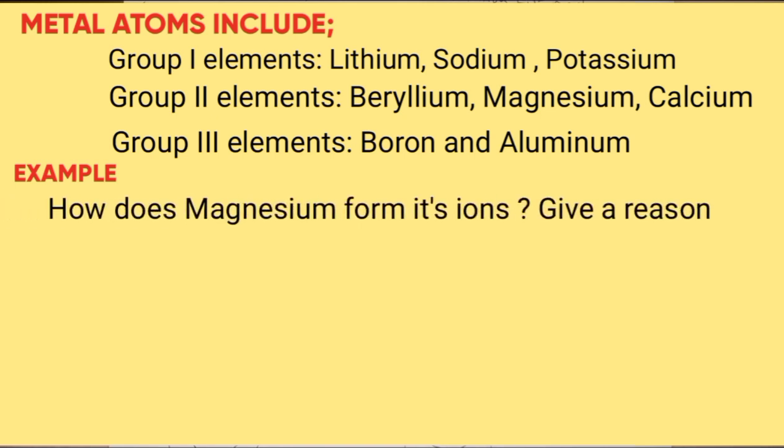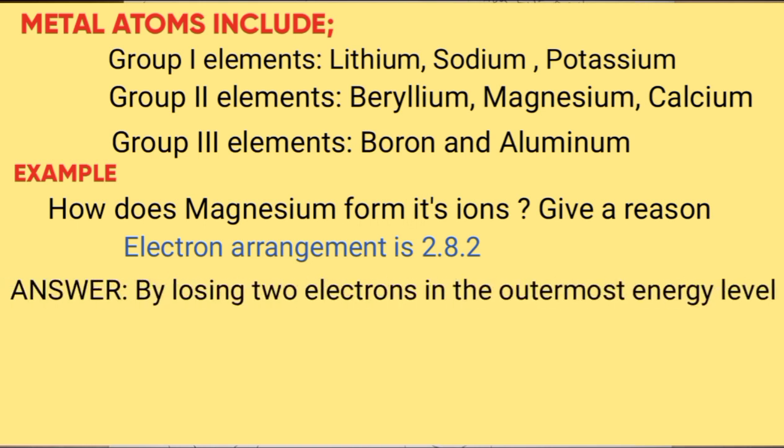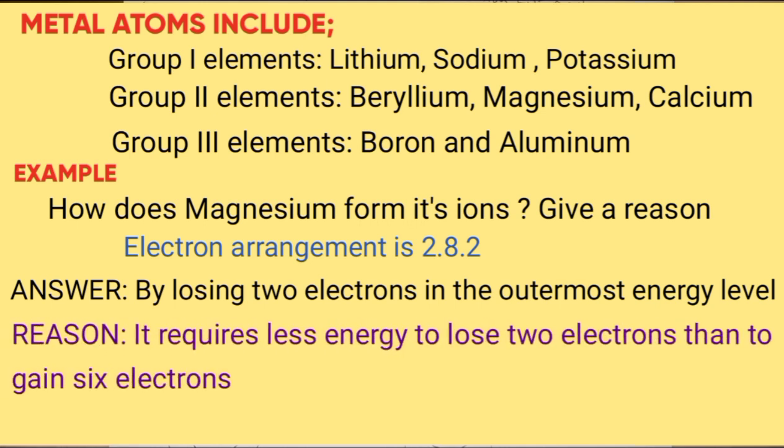Take an example. How does magnesium of atomic number 12 form its ions? The electron arrangement of magnesium is 2.8.2. There are two ways of magnesium attaining stability: by losing 2 electrons to be 2.8 or gaining 6 electrons to be 2.8.8. The easiest one is by losing 2 electrons in the outermost energy level. The reason: it requires less energy to lose 2 electrons than to gain 6 electrons.